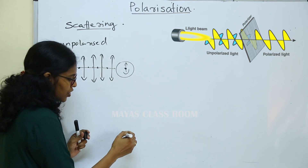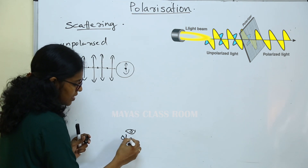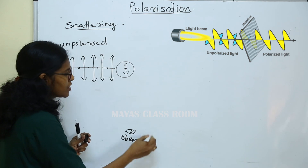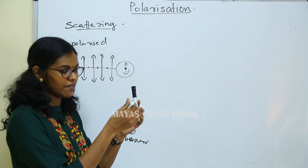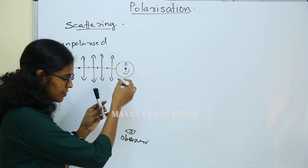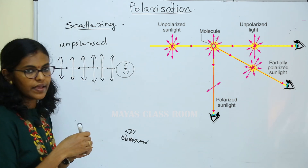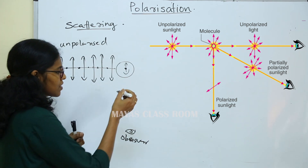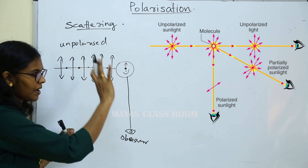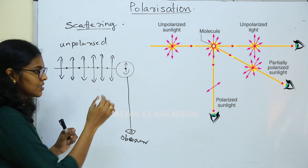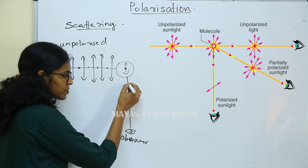We can observe a view here. This is the observer, so the observer views through the eye. The electric vibration is observed. If you see the magnetic vibration, the power is observed, or if the electric vibration is perpendicular, it is observed.